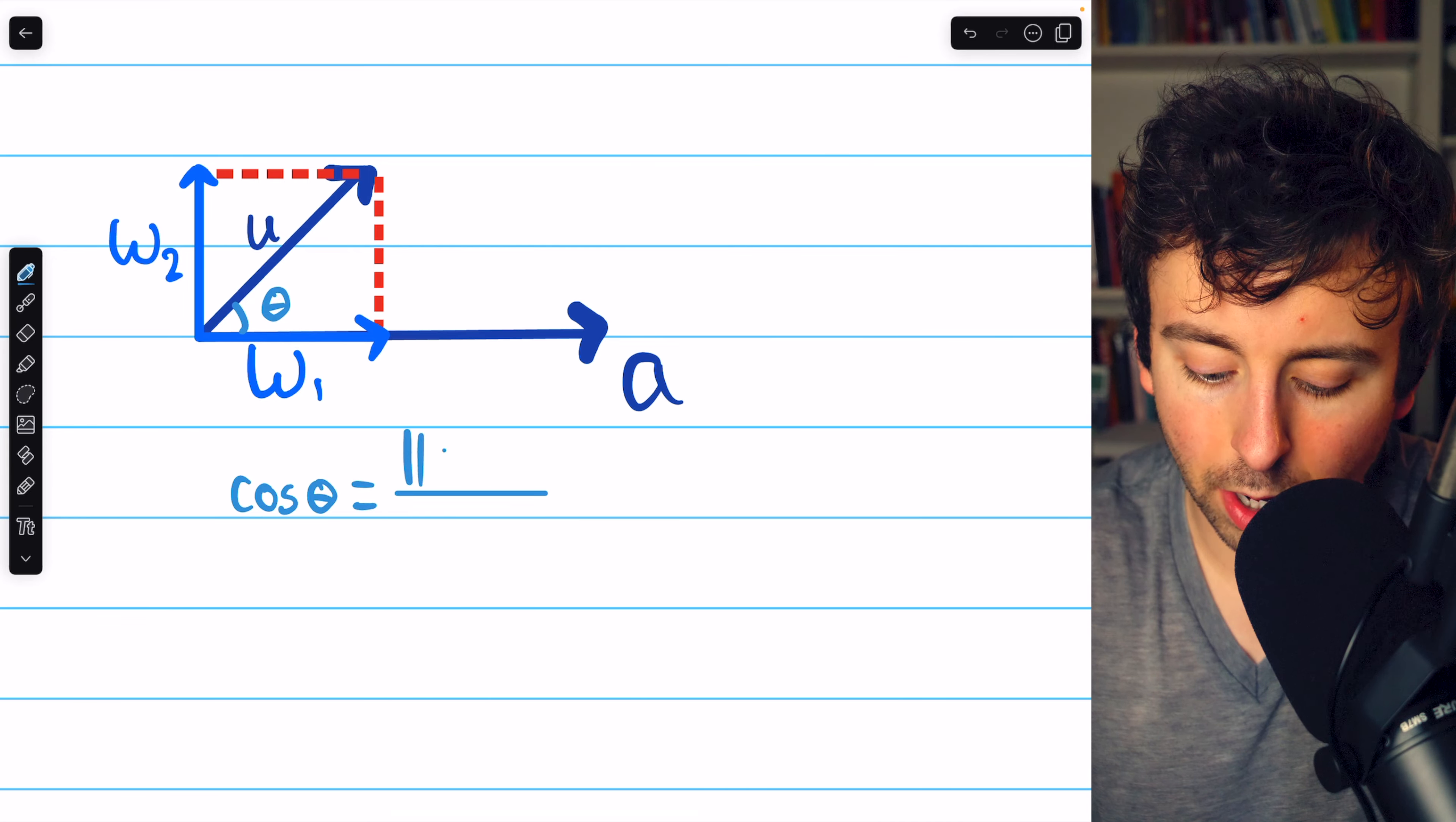First, we're going to need the dot product u·a. So multiply corresponding components together: 3 times 1 is 3, 1 times 0 is 0, negative 7 times 5 is negative 35, and add those together. So the dot product is negative 32.